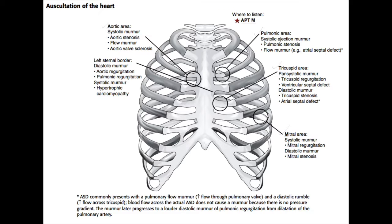At the left sternal border, you can hear different heart sounds including a diastolic murmur which is commonly heard in aortic regurgitation and pulmonic regurgitation, as well as the hypertrophic cardiomyopathy sound which is a systolic murmur. This is generally heard along the entire left sternal border, so this is not one of the classic listening posts per se. But it's much easier to hear aortic regurgitation at the left sternal border than at the actual aortic area. So the left sternal border is where you listen for these regurgitant sounds.